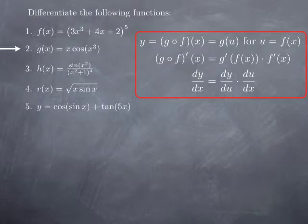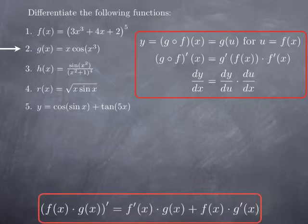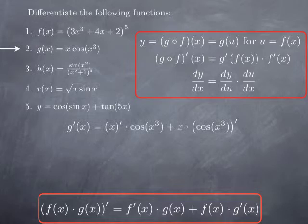The second function we want to differentiate is x multiplied by cosine of x cubed. This is a product, so we're going to use the product rule, which we recall here at the bottom. Applying the product rule, we have two factors: the first factor is x, the second factor is cosine of x cubed. So we obtain the derivative of x multiplied by cosine of x cubed, plus x multiplied by the derivative of cosine of x cubed.